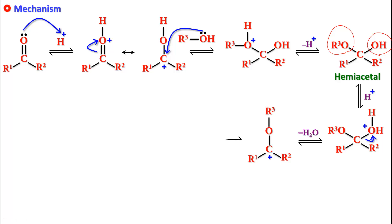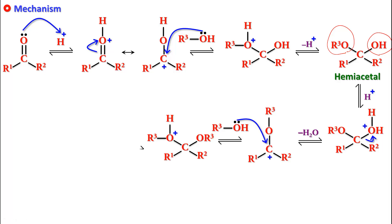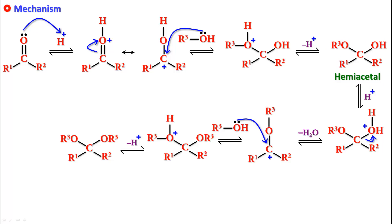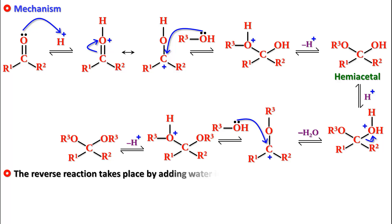Another molecule of alcohol attacks this carbocation, and after releasing a proton we get the acetyl or ketyl. If you use only one mole of alcohol for every mole of aldehyde or ketone, you stop at the hemiacetal stage. If you use two moles of alcohol, you end up getting the acetyl or ketyl. The reverse reaction takes place by adding water in the same acidic medium, and acetyls and ketyls are unstable in acidic medium for this reason.